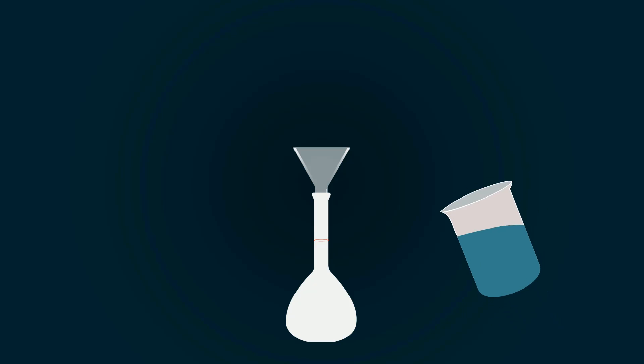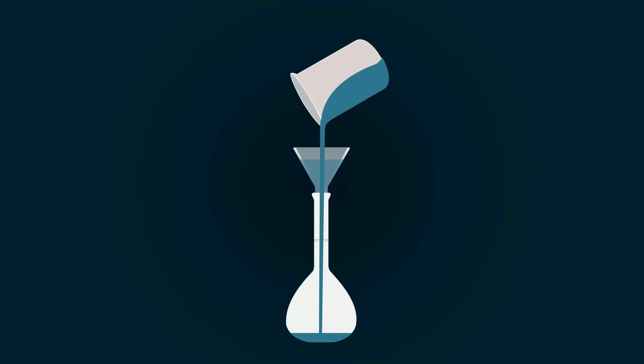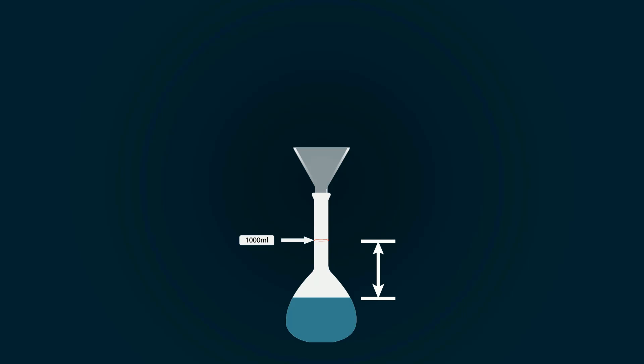Now add this mixture into the measuring flask of 1000 ml with the help of funnel. We must add more distilled water so that we reach the 1000 ml point. So add more distilled water.